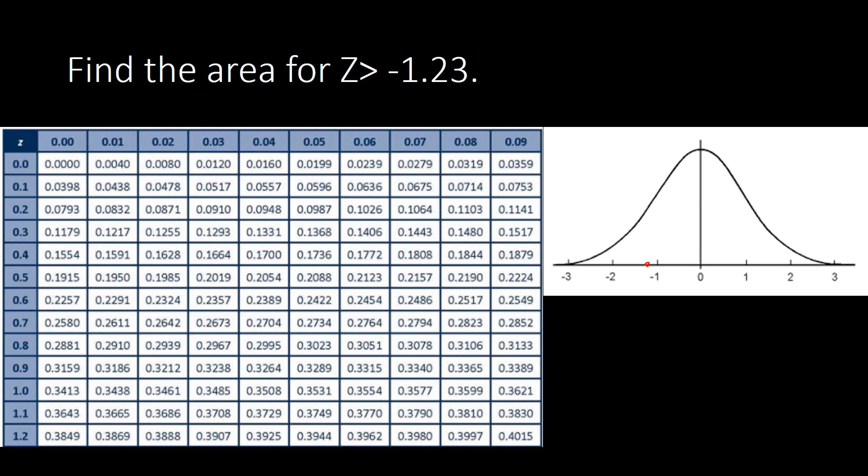So negative 1.23 is located somewhere here on the left. We have 'greater than,' which means the z-values greater than negative 1.23 are on the right side of that z-value, so we will be shading to the right side.